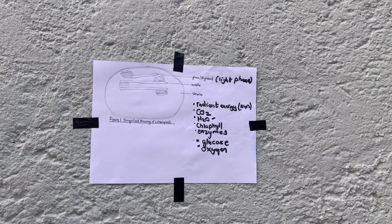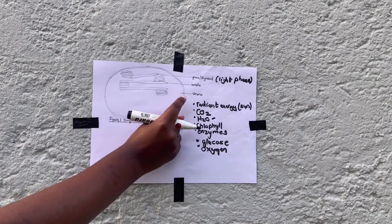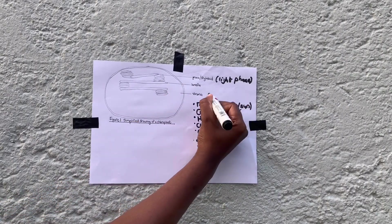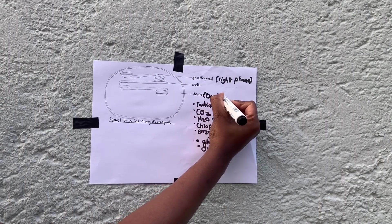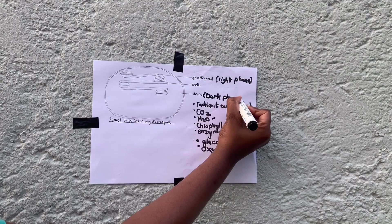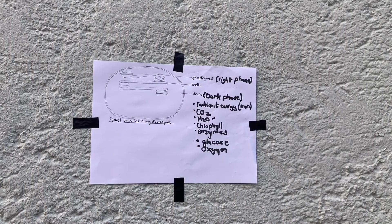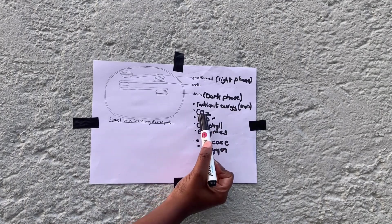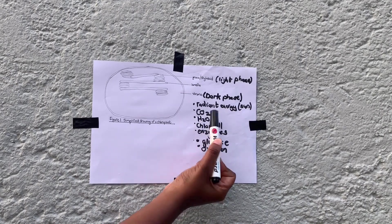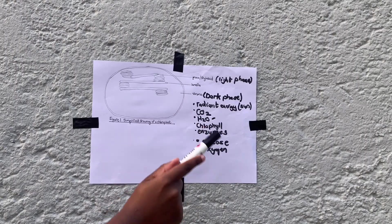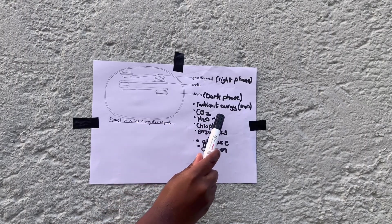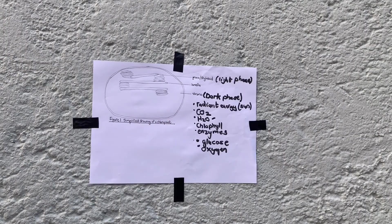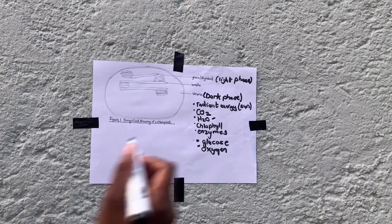Then we have the dark phase. The dark phase happens in the stroma. Here in the stroma, carbon from the carbon dioxide taken in by the plant and the hydrogen that comes from the light phase are combined, and that gives us glucose. That is what happens in the dark phase.